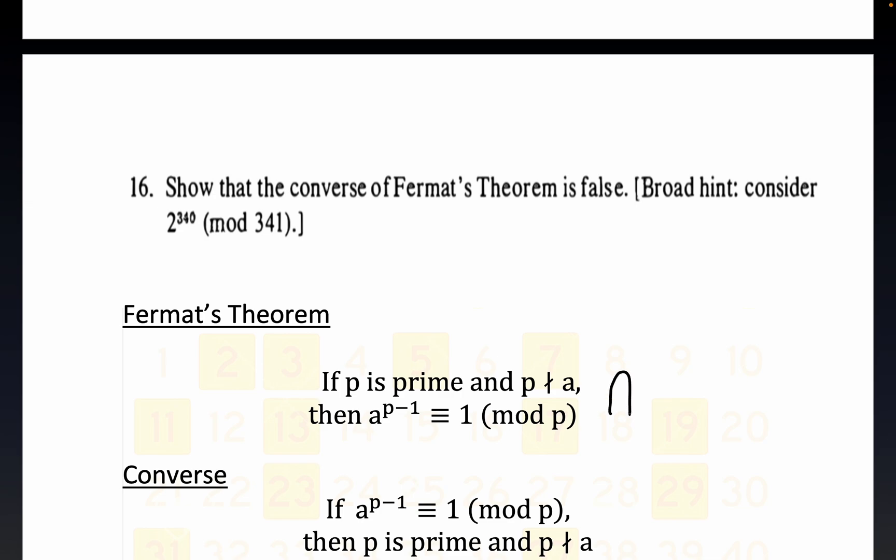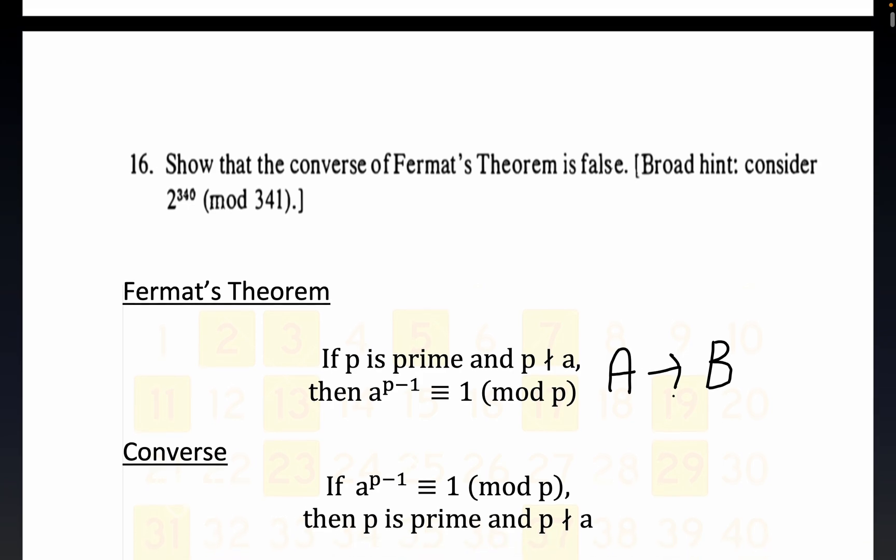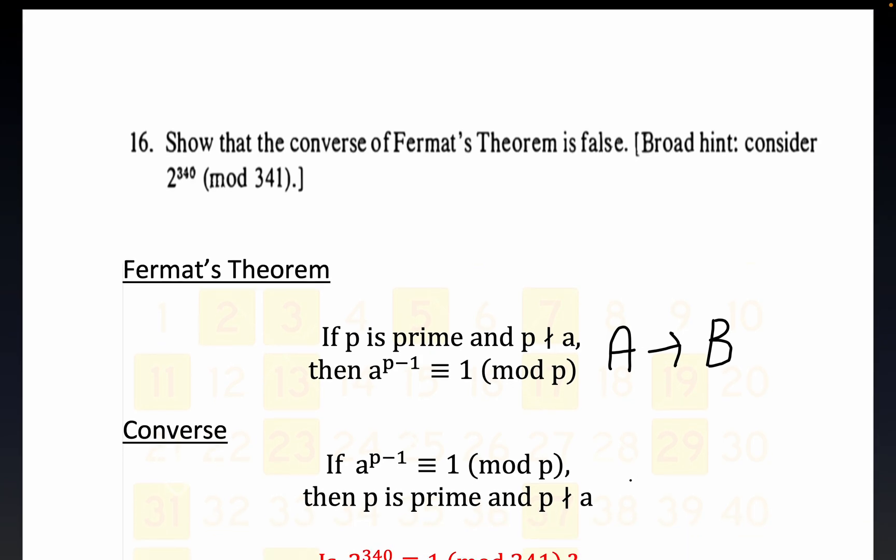We're trying to prove a result or homework problem from Underwood Dudley's number theory book. It's an older number theory book, but we have the well-known result, Fermat's Theorem. There's two different forms; this is one of them in the form A implies B.